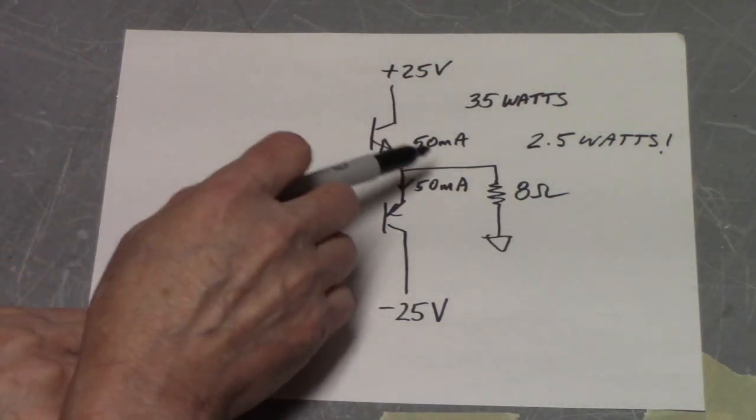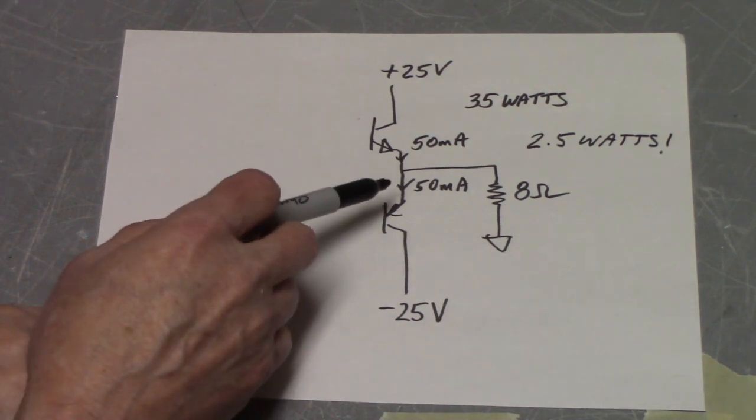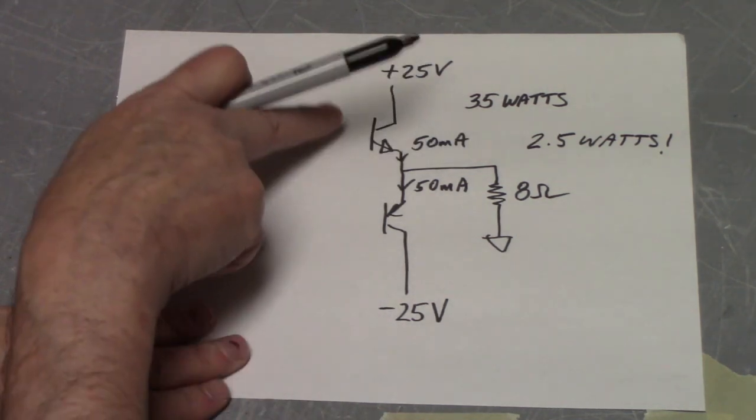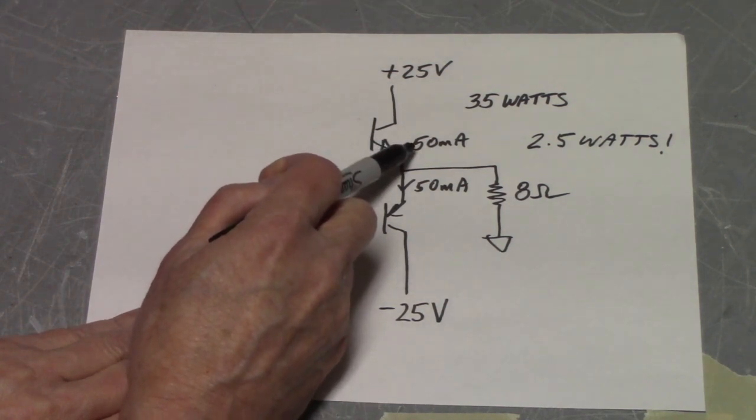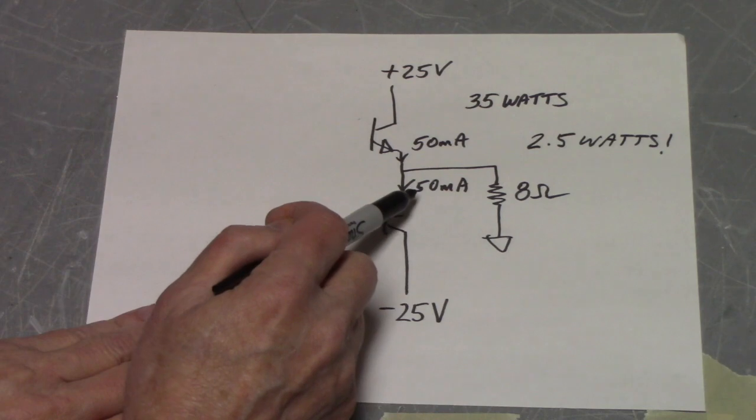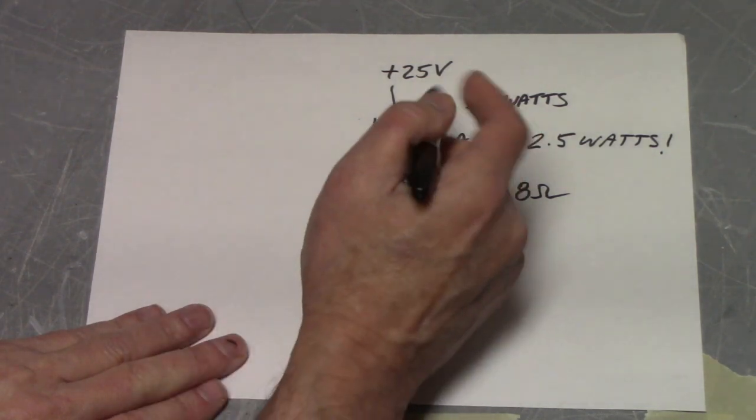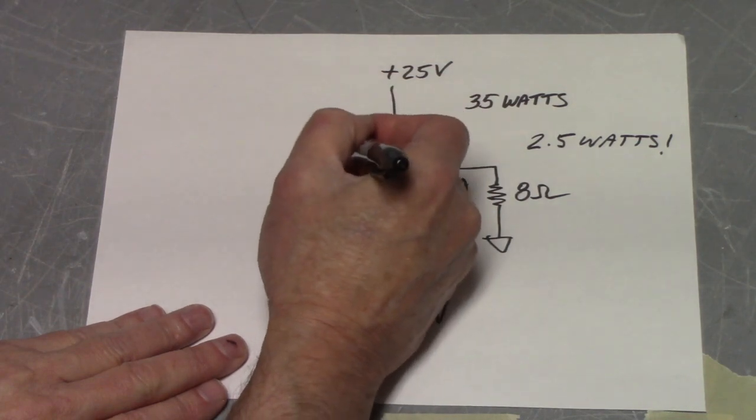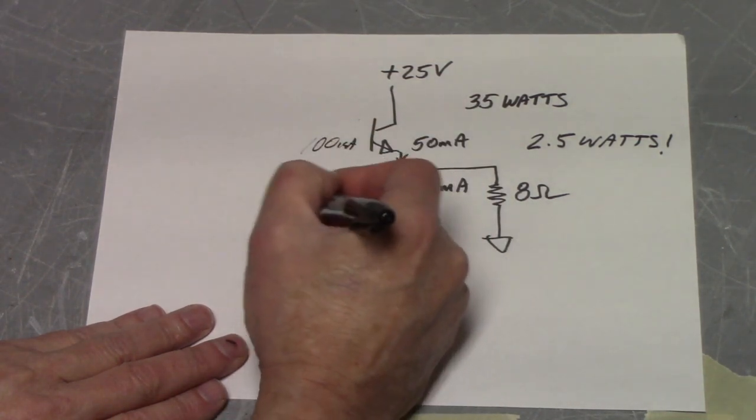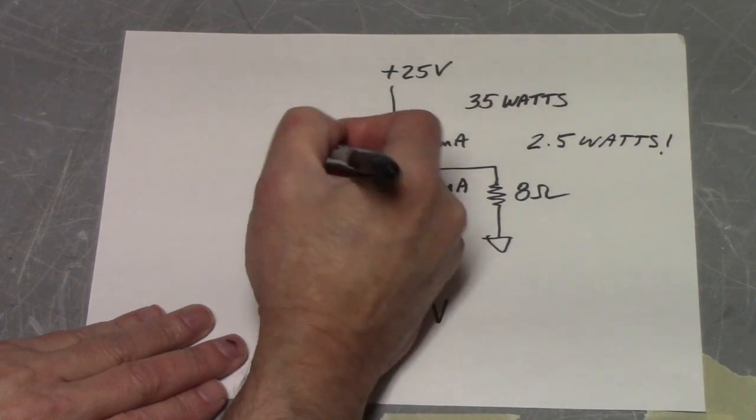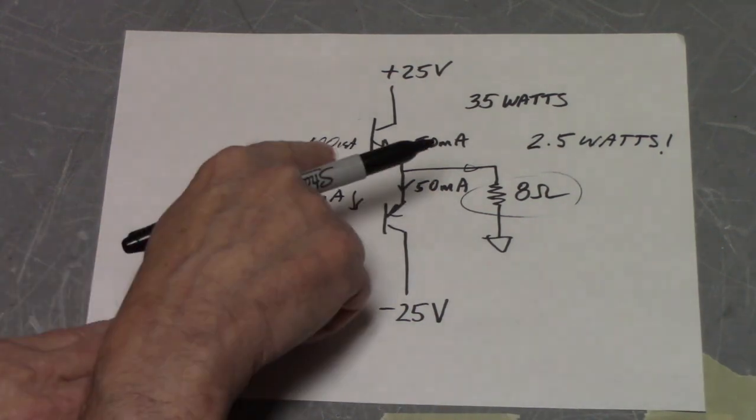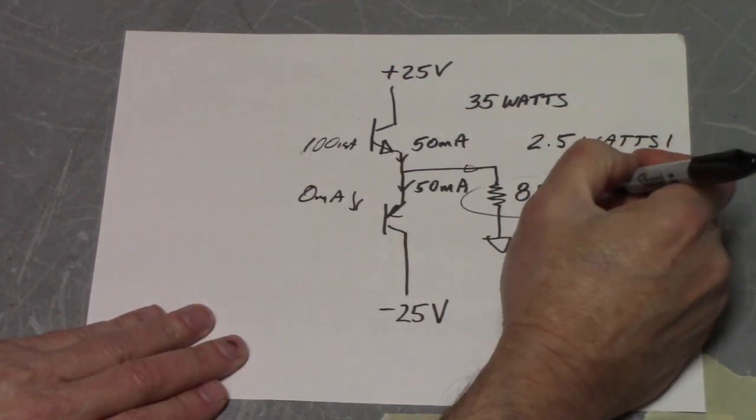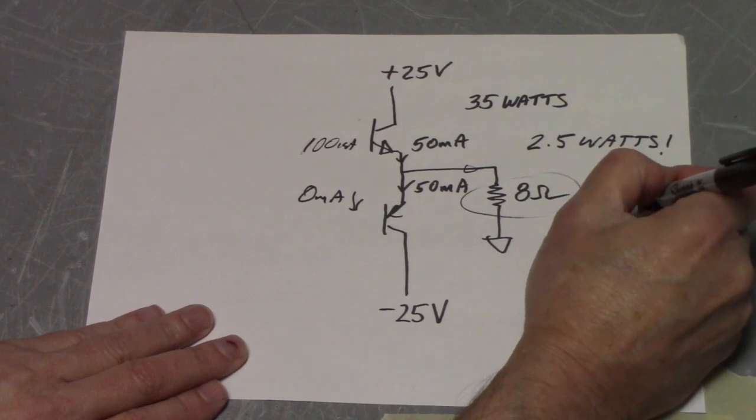And let's say that the way the transistors are being driven, that when this transistor's current goes from 50 to 100 mils, that this one decreases from 50 mils to zero. And at that point, we've got 100 mils here. We've got 0 milliamps there. So all that 100 milliamps appears into the 8 ohm load. And 100 milliamps times 8 ohms is 0.8 volts peak.